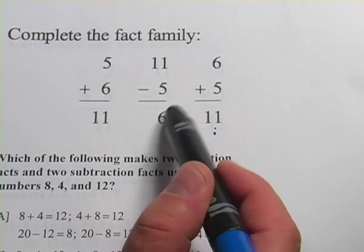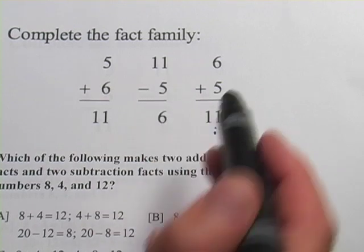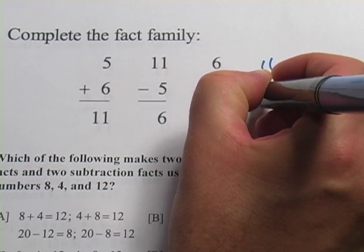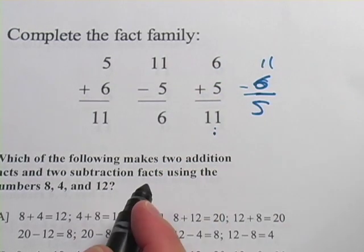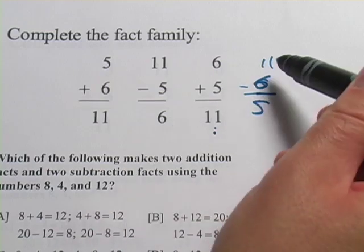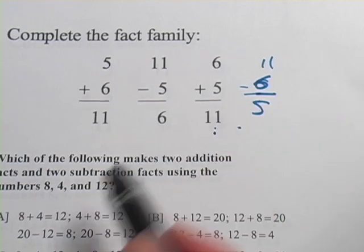So to complete this, I just need to flip around the 5 and the 6 here, and I get 11 minus 6 equals 5. That would complete the fact family. It still uses just 5, 6, and 11, but it's the one that was missing.